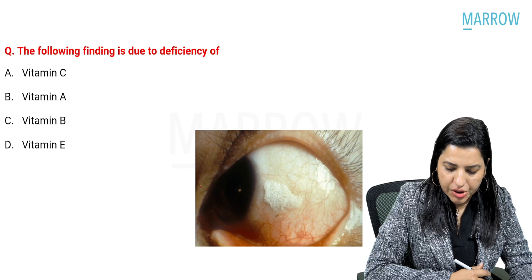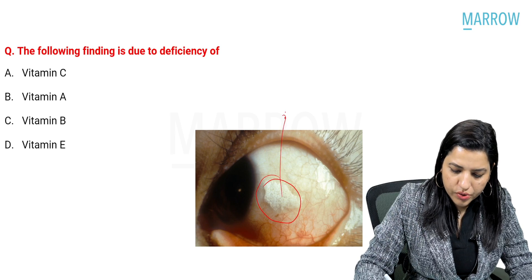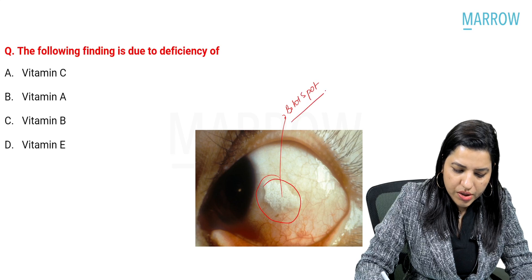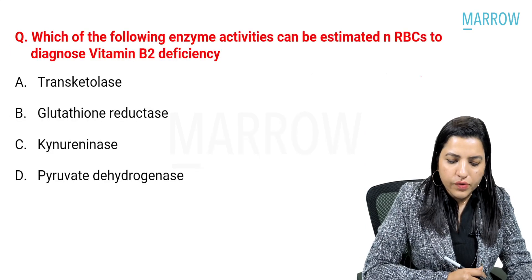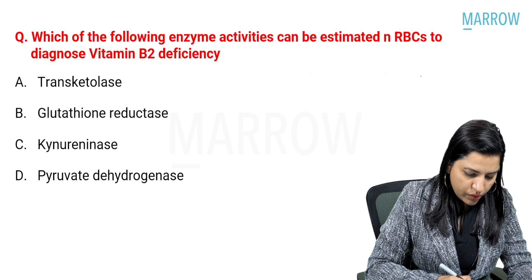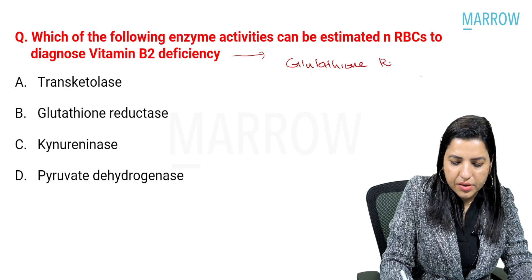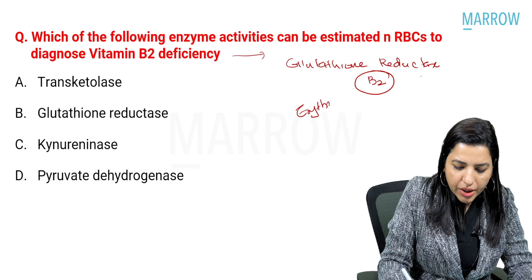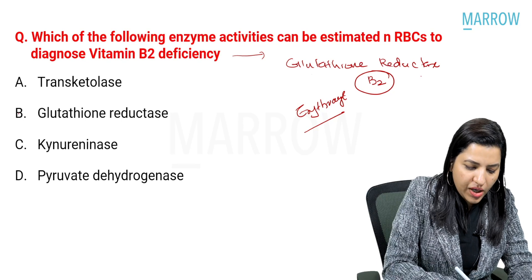The following finding — you can see that the triangular raised lesion here is a Bitot's spot. Bitot's spot is seen in deficiency of which vitamin? Bitot's spot is seen in deficiency of vitamin A. Which of the following enzyme activities can be estimated in RBC to diagnose vitamin B2 deficiency? Vitamin B2-containing enzyme is glutathione reductase — this is a flavoprotein, and flavoproteins contain vitamin B2. So erythrocyte glutathione reductase activity is used to find out B2 deficiency. The answer here is B.